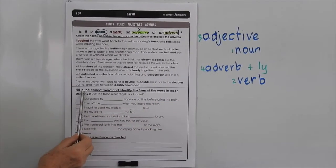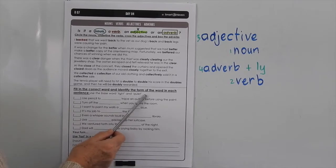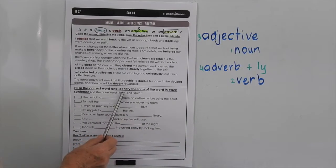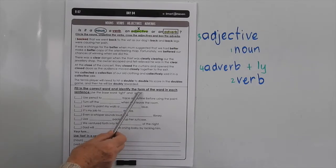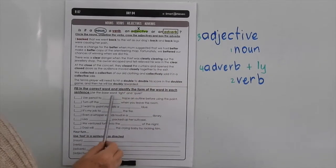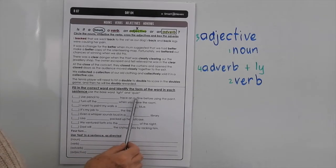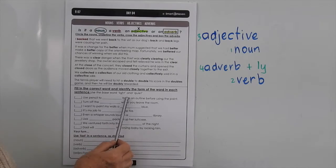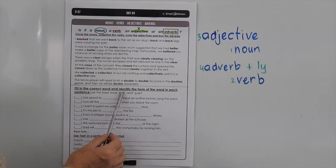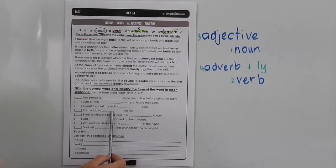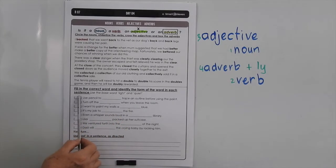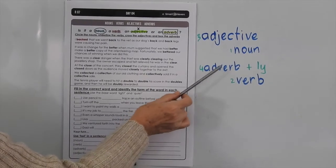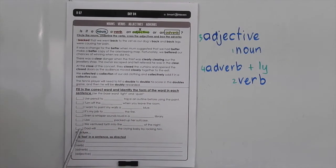That will also be handy to remember when you fill in the correct word and identify the form of the word in each sentence. Here you're going to use the words light and quiet, but you may need to add to that base word to put it in its correct form. For example, use pencil to lightly trace an outline before using the paint — trace is a verb so we need an adverb, so we add ly and say lightly trace. You're going to use light in each of its forms in these four sentences and quiet in each of its forms in these four sentences. Then just put adj, n, adv, or v in the bracketed lines.